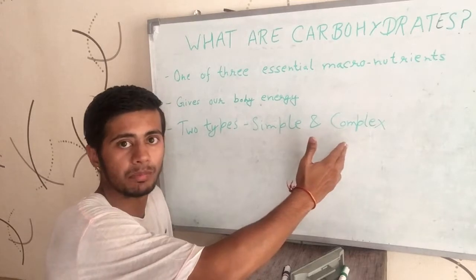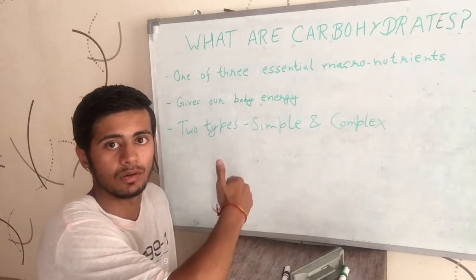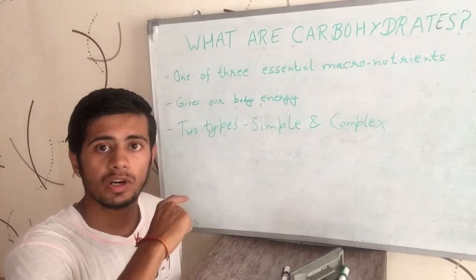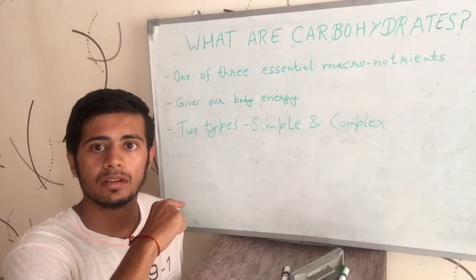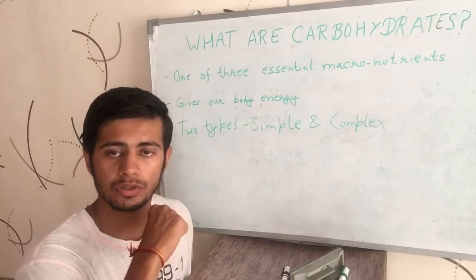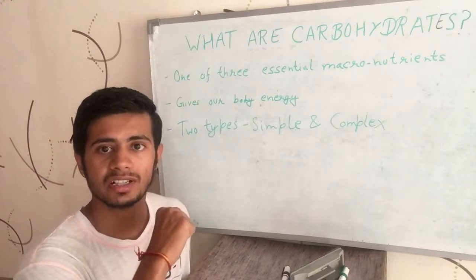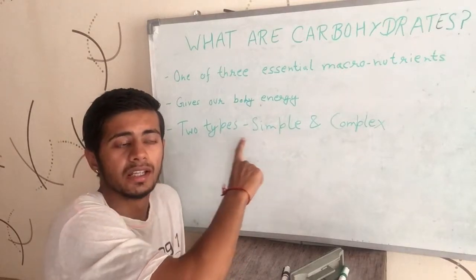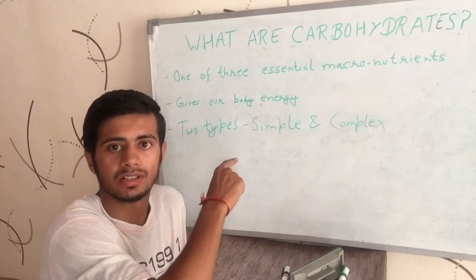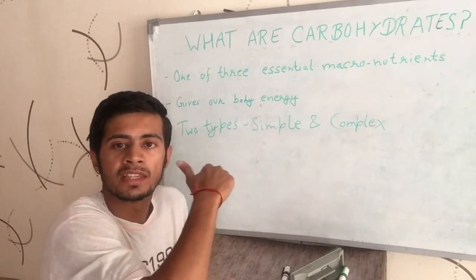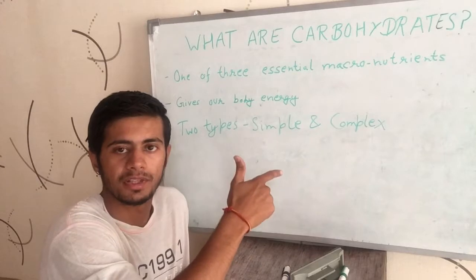Basically, you should eat more complex carbohydrates and less simple carbohydrates. Whichever carbohydrate it is, it will become glucose or your blood sugar once it gets digested. Even if it is simple carbohydrate, it will get digested and become your blood sugar. If it is complex carbohydrate, it will get digested and become your blood sugar.